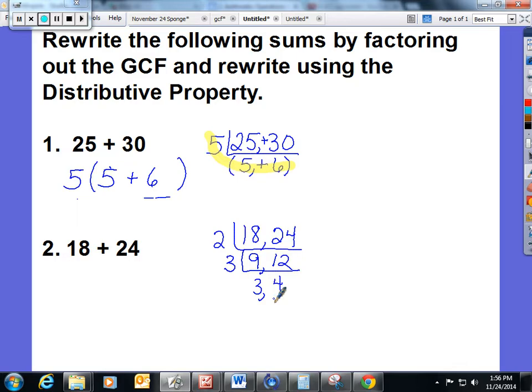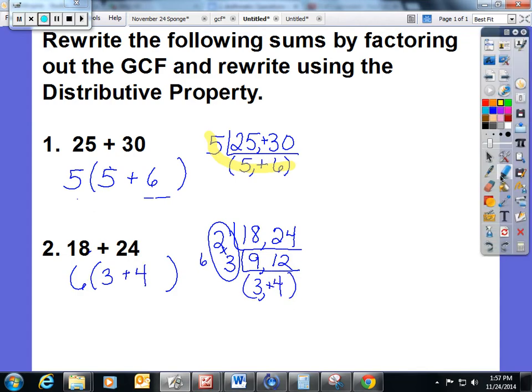If I look at 3 and 4, I know the only common factor that goes into them evenly is 1, so I know I am done with my ladder. So I take the stuff on the side and I times it: 2 times 3 is 6. So I'm going to pull the 6 out of the 18 and the 24. 18 divided by 6 is 3, 24 divided by 6 is 4. Again, this would give you 6, and then you would have 3 plus 4 in parentheses.